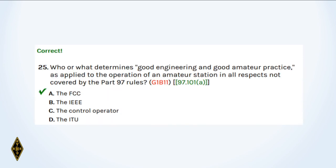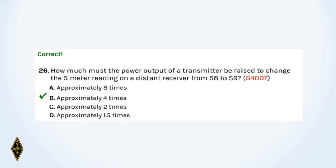And 25: Who or what determines good engineering and good amateur practice? The FCC — in the United States, the FCC. And 26: How much must the power output of a transmitter be raised to go from S8 to S9? Each S unit represents 6 dB, and that's four times the power.